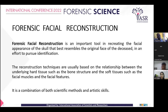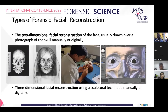When a decomposed, mutilated or skeletonized body is found, facial reconstruction should always be considered as a viable option to help identify the remains. There are two types of process: two dimensional and three dimensional. The two dimensional facial reconstruction is usually drawn over a photograph of the skull and can be done manually or digitally. When we do three dimensional facial reconstruction, it is usually a sculpting technique which again can be done manually or digitally.